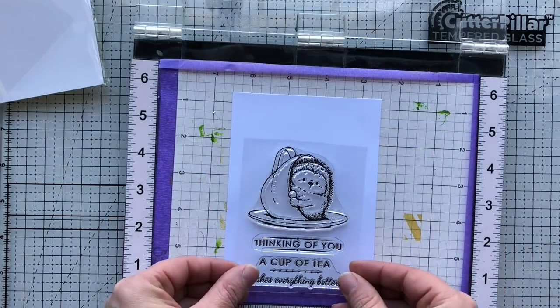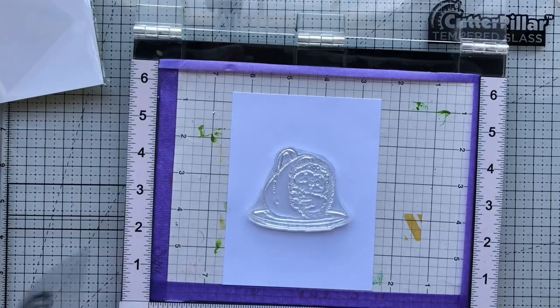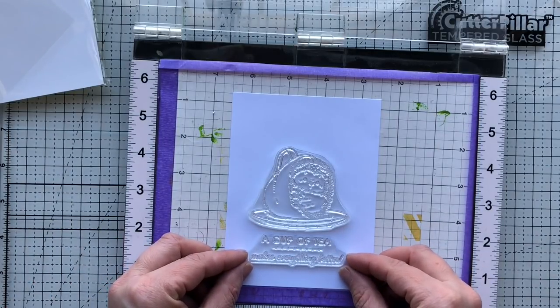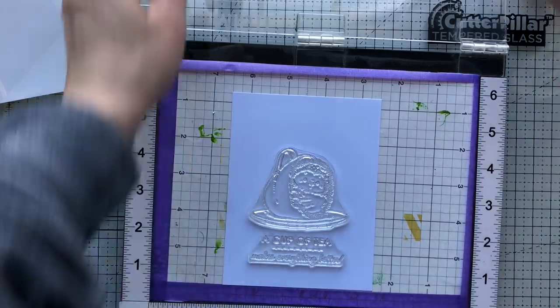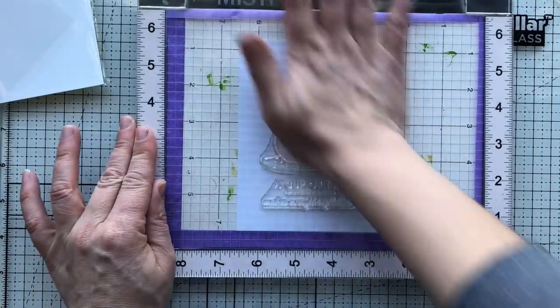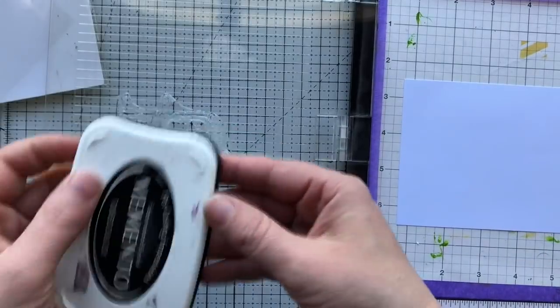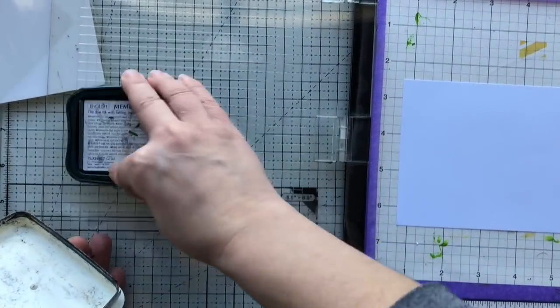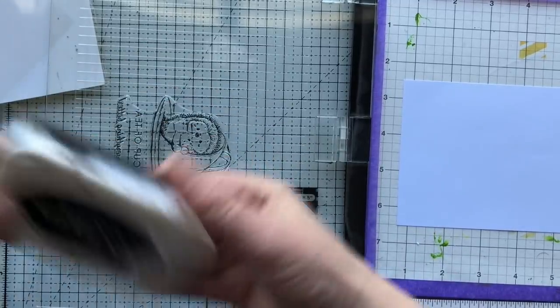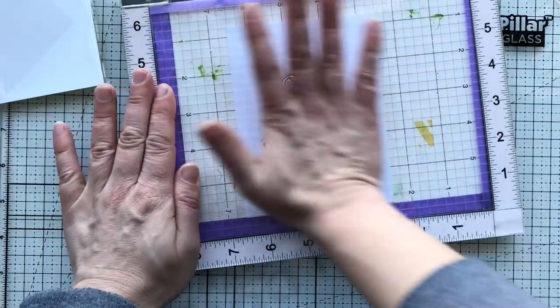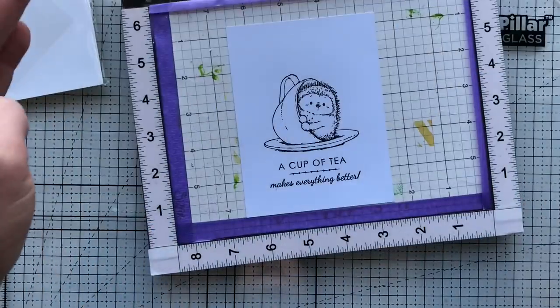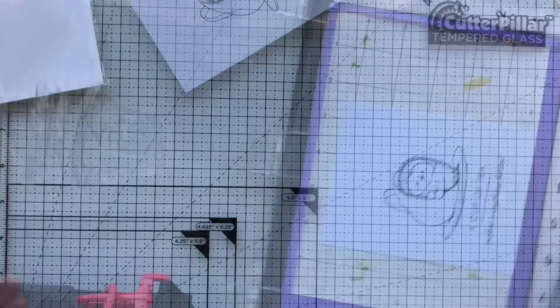Moving on to this card - this is a cute little hedgehog in a teacup from Penny Black. Again, all the supplies that I'm using are linked below in the description in the order that they appear here on the video. I'm using my MISTI tool so I can ensure that I get good placement, and plus I can go ahead and ink up my image and everything at the same time, because I'm totally lazy - it's true.